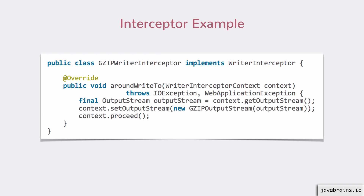Here's an example for an interceptor, taken from the JAX-RS documentation for Jersey. There is a gzip writer interceptor. The way to implement an interceptor is to implement the writer interceptor interface, which has a method called aroundWriteTo that gets a context object containing the output. Here, we're getting the output stream and doing a gzip on the output — essentially gzipping the contents of the response. This is why the right tool here is an interceptor and not a filter, because we are changing the body. Gzip is a very classic example of why you would need an interceptor, though it's not very common for you to write interceptors. But it's good to know in case you need to manipulate the request or response bodies.